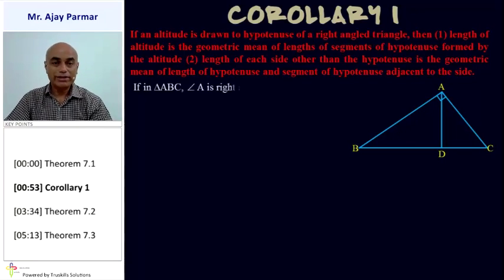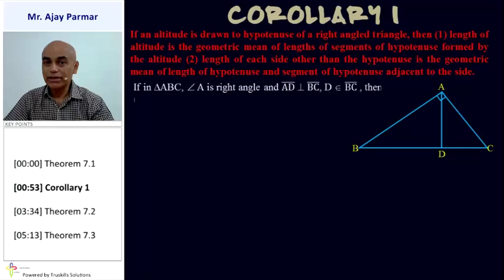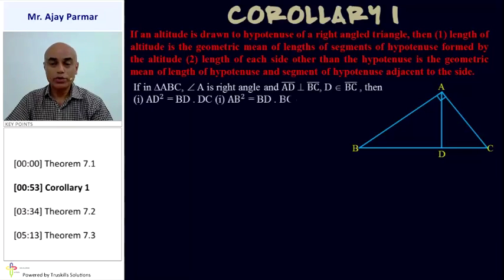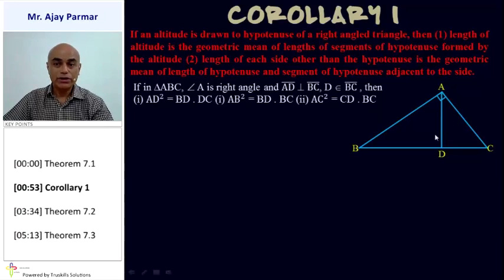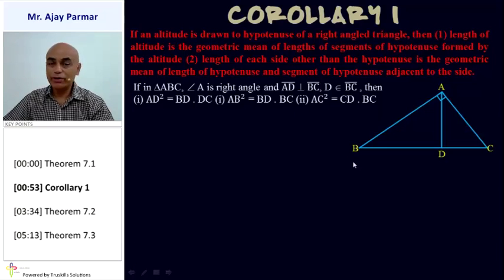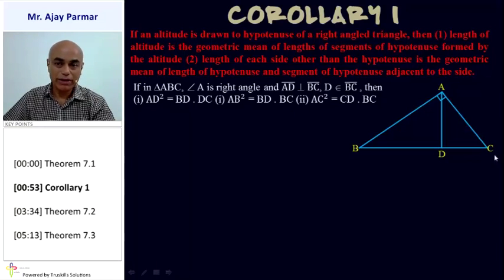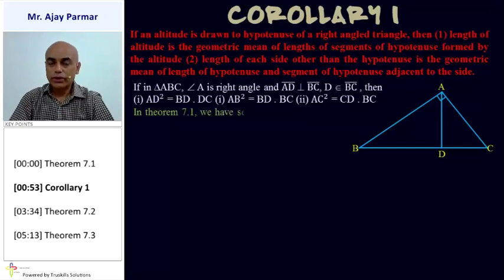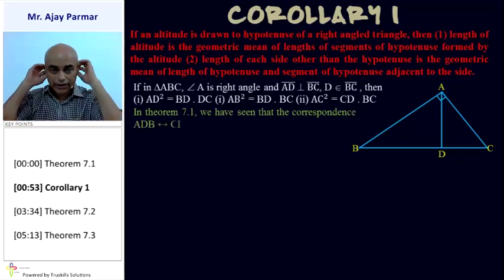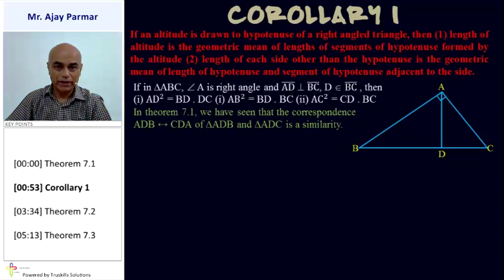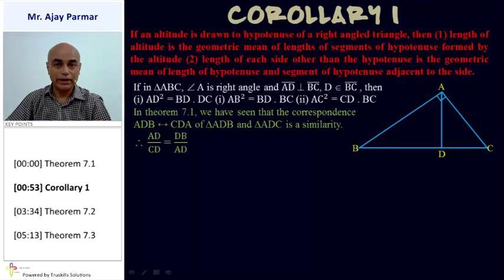In triangle ABC, measure of angle A is 90 degrees and line segment AD is an altitude. We need to show that AD² = BD × CD, AB² = BD × BC, and AC² = CD × BC. We make use of Theorem 7.1. According to it, triangle ADB corresponds to triangle CDA is a similarity, and because of that we can write the ratio: AD/CD = DB/AD. By cross multiplication, AD² = BD × DC.